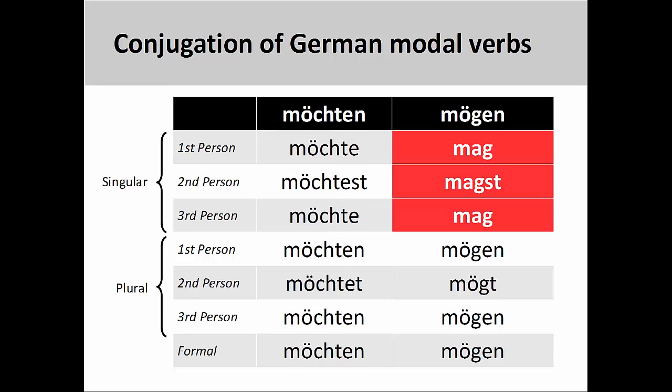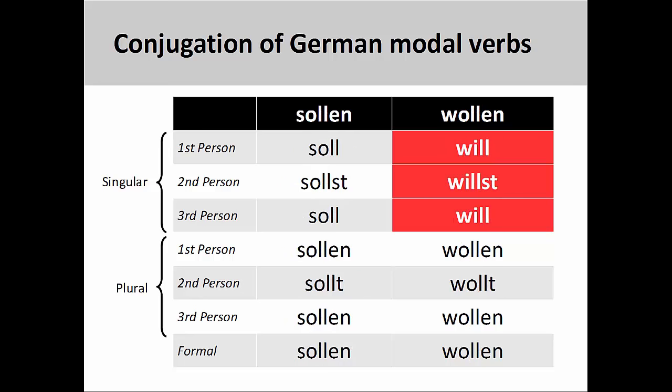The stem vowel in the modal verb möchten does not change in either the singular or the plural. The stem vowel in the modal verb mögen changes from ö to o in the singular and goes back to ö in the plural. The stem vowel in the modal verb sollen does not change in either the singular or plural. The stem vowel in the modal verb wollen changes in the singular and goes back in the plural.